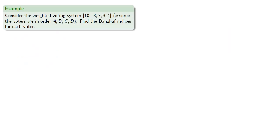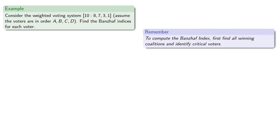Let's analyze a simpler system, say, this weighted voting system. So remember to compute the Banzhaf index. First, find all winning coalitions and identify critical voters.